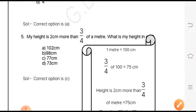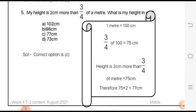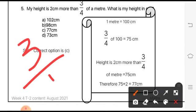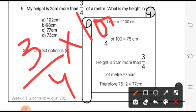The last question is: my height is 2 centimeters more than 3 by 4 of a meter. What is my height in centimeters? We have been given that 3 by 4 of a meter plus 2 gives us the total height, but the answer is to be given in centimeters. So we convert this meter into centimeters first.